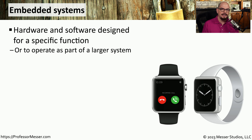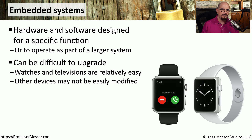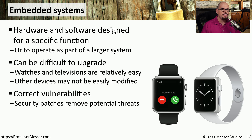Embedded systems provide another challenge for device hardening, because they have their own operating system running inside a purpose-built appliance. We often see these embedded systems in things like smartwatches, televisions, and purpose-built appliances. Because of this limited access to the operating system, these devices can sometimes be challenging to upgrade. And in the case of a purpose-built appliance, it may be very unusual to receive a security patch. This means if you do receive a notification for a security patch for an embedded device, you should look into installing it as soon as possible.